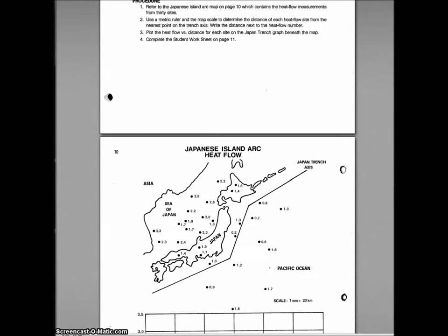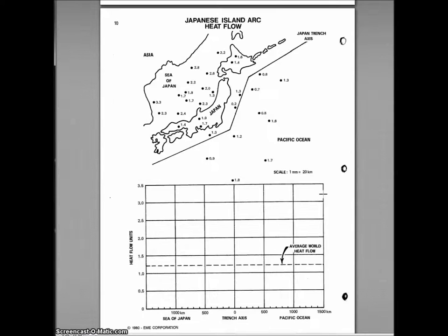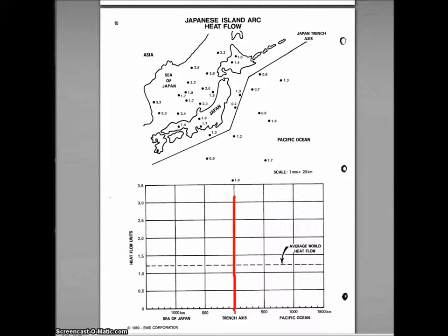On this graph you can see the Japan Trench and several different points — little dots with decimal values — which are actually showing the heat flow for the region. Heat flow is essentially a measurement of how much magmatic activity is occurring, shown in heat flow units. The trench axis is right up the middle, so you need to pay attention to whether you're going towards the Sea of Japan or towards the Pacific Ocean. Japan is pretty much up the middle and also has some heat flow going on, which means volcanic activity is a possibility.